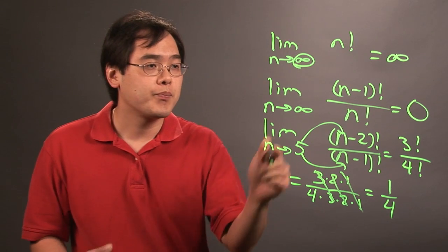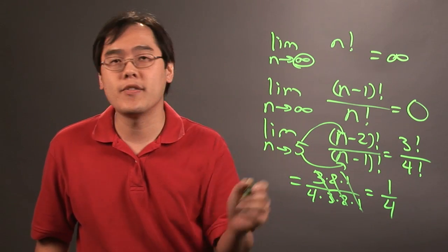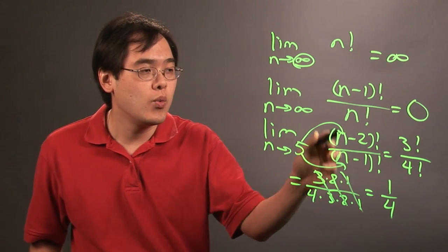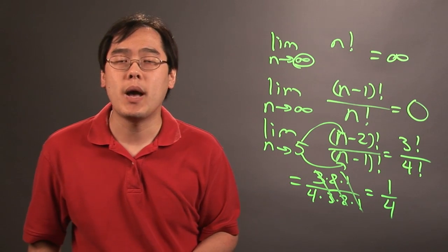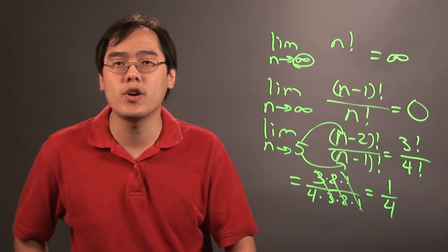So in order to find the limit of a factorial function, you really have to determine what value the independent variable is approaching and how you set up the factorials. I'm Jimmy Chang, and these are a few examples on how to find the limit of a factorial function.